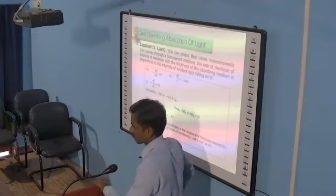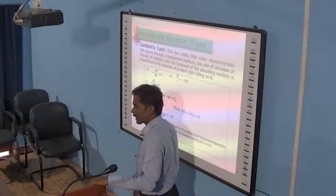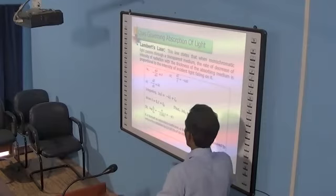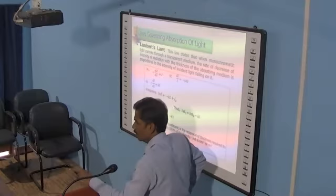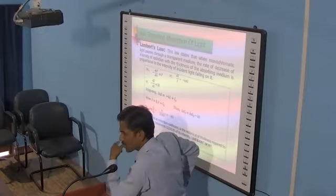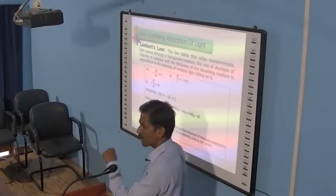We start with: minus dI/dL is proportional to I, where I is the intensity of the radiation, dI is the decrease in intensity, and dL is the thickness of the medium. We have stated that the decrease in intensity of radiation with thickness dL is proportional to the intensity of radiation falling on it — that is, minus dI/dL is proportional to I.